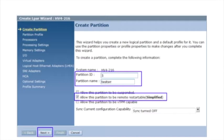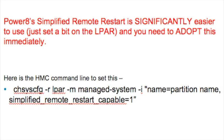Here is how you set it. When you create an LPAR, you can check the box that says 'allow the partition to be remote restarted.' This option is shown on the create partition wizard, and with the new 850 HMC it's also available in the enhanced GUI. My suggestion for any P8 or future P8 customers: this is easy to use, just set a bit on the LPAR and adopt this immediately. If you already have P8 LPARs and don't have the 850 HMC code yet, you can change this capability via the HMC command line — and here's the command to do it.